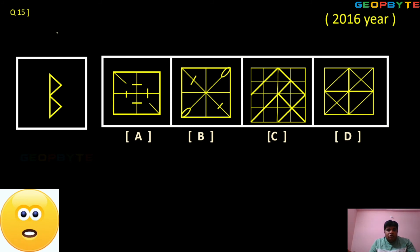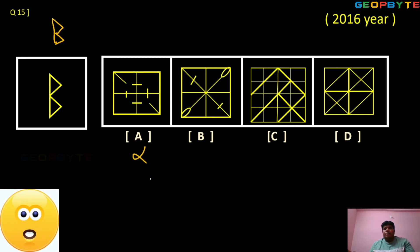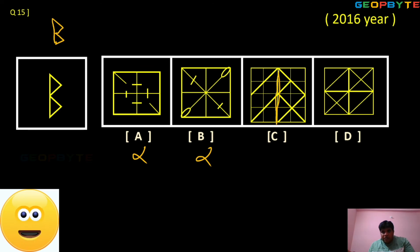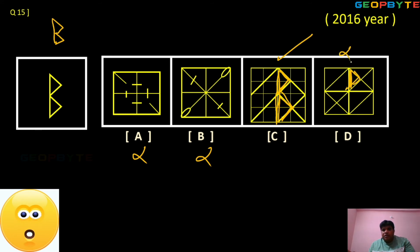This one is looking like a B shape or two triangles. In option A, not getting. In option B also, not getting. In option C, check it here — satisfied. In option D, only one triangle is existing — not satisfied. Option C is the right answer.